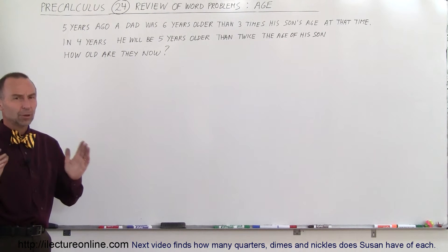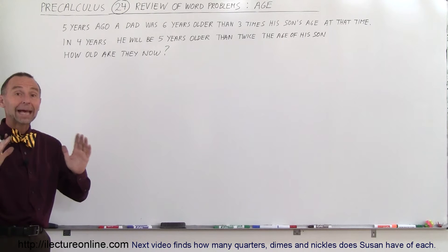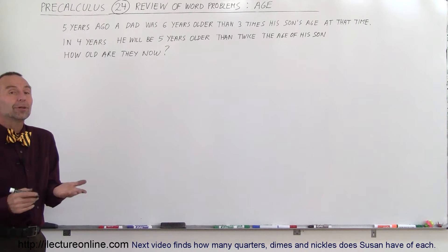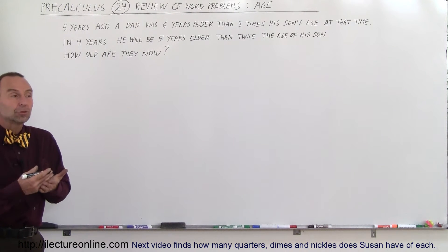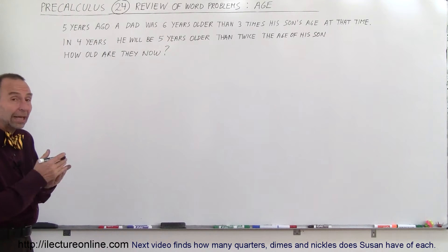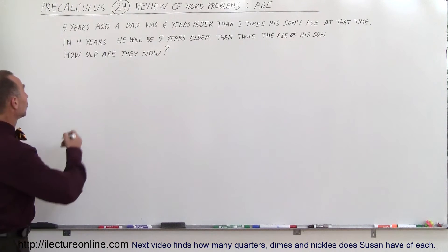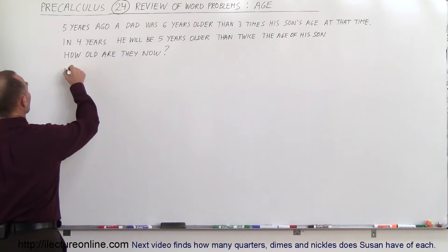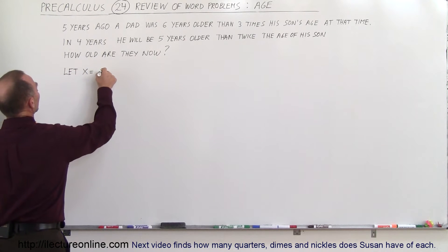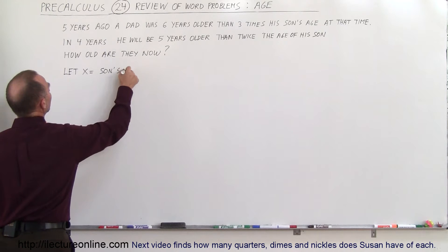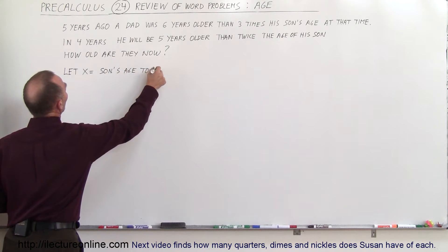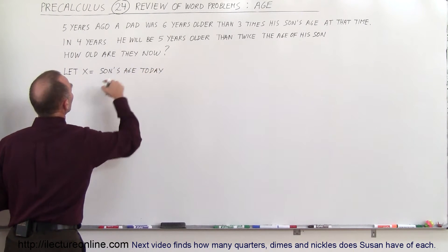Where do you start? Always start with 'let X equal something.' Since the son is the youngest of the two people, let X equal the son's age today. So everything will be relative to that age.